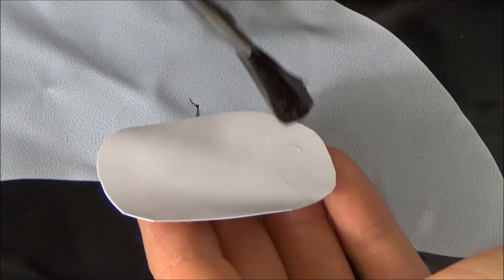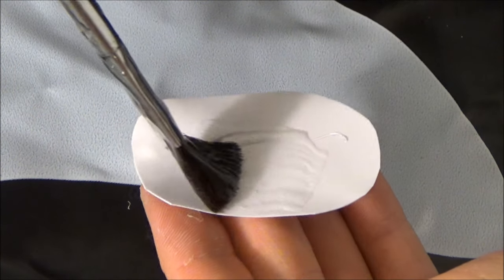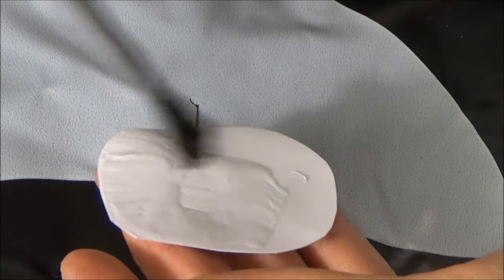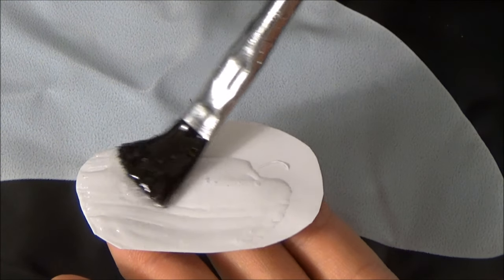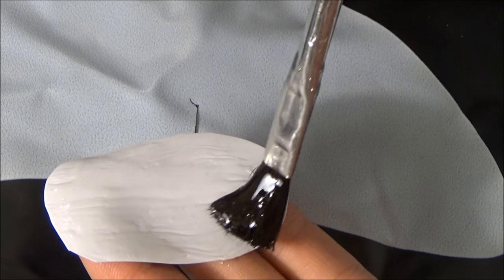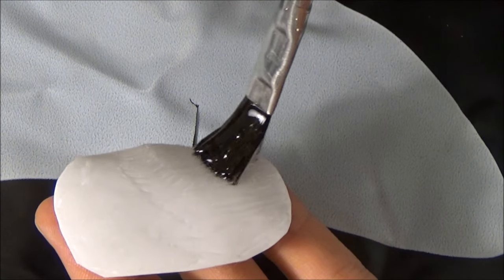Usually glue would be applied to both surfaces for the best bond, but due to the paint on the toy, I will not be applying glue to the toy side of the joint. Instead, I uniformly apply glue to the patch only. The glue is applied to the same side of the patch as I just cleaned.